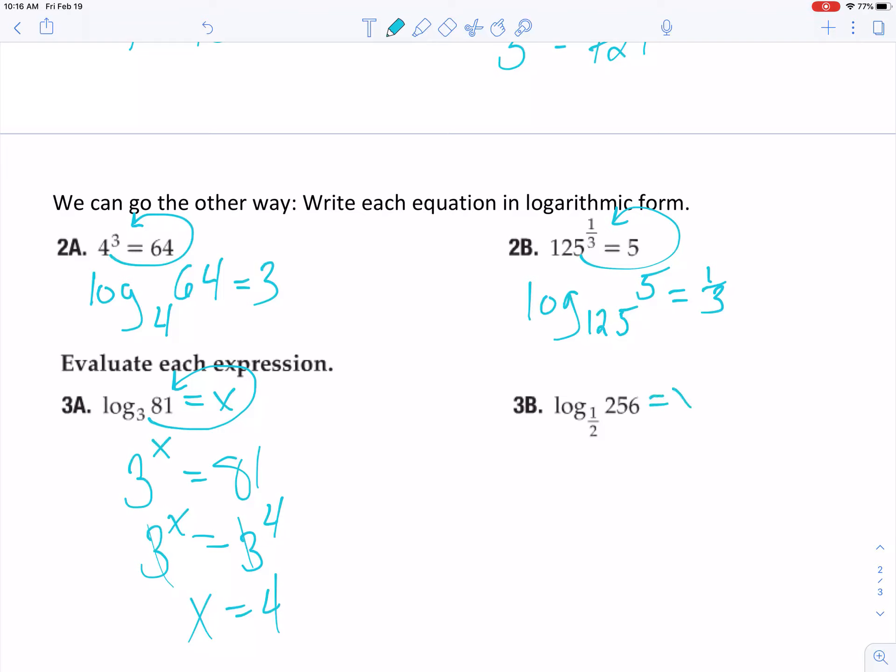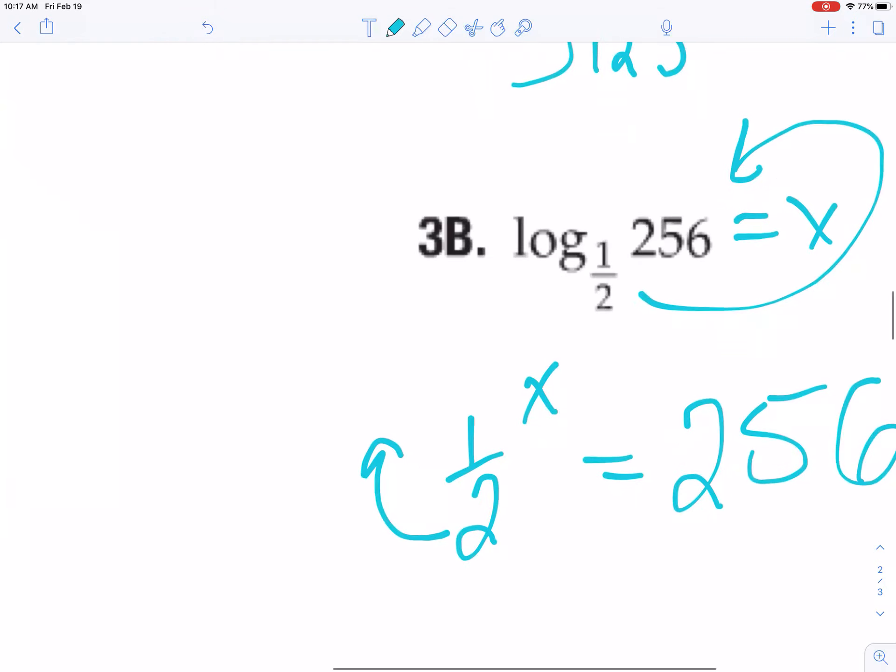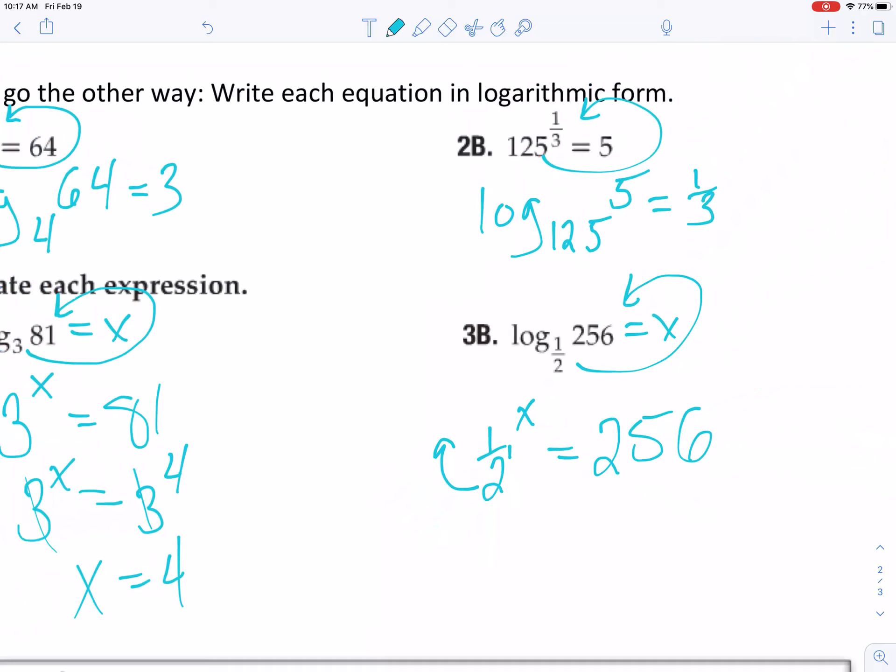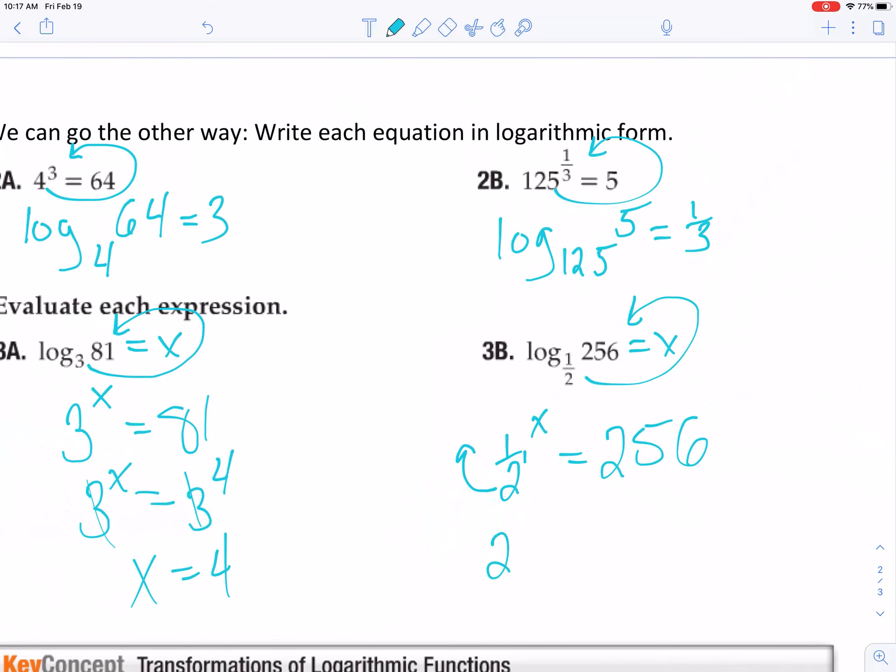So again, all I do is just set it equal to x. I use my circle method to rewrite that. This one's a little more complicated with that base of 1/2. I think what I'll do is pull this 2 up. It actually secretly has an exponent of 1, right? So if I rewrite that, I can make that 2 to the negative 1 and just keep that x power there.